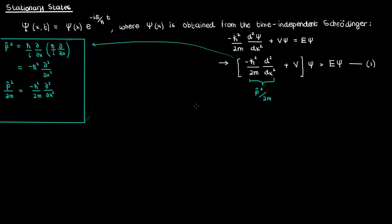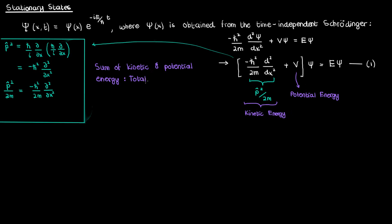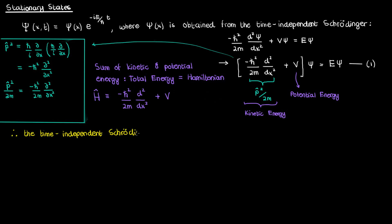The term next to the p squared over 2m is the potential energy operator V. Now if you recall classical mechanics, p squared over 2m is the kinetic energy — just substitute p equals mv and you'll see why — and V is the potential energy. Their sum is the total energy, which is also called the Hamiltonian, so the operator on the left is the Hamiltonian operator H-hat, given by the sum of the kinetic and potential energy operators. So the time-independent Schrödinger equation is given by H-hat operating on psi equals E times psi, where E is some constant. I'll call this equation 2.